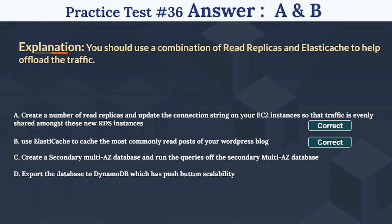The right answer is A and B. Create a number of read replicas and update the connection string on your EC2 instances so that traffic is evenly shared amongst these new RDS instances, and use ElastiCache to cache the most commonly read posts of your WordPress blog. You should use a combination of read replicas and ElastiCache to help offload the traffic.